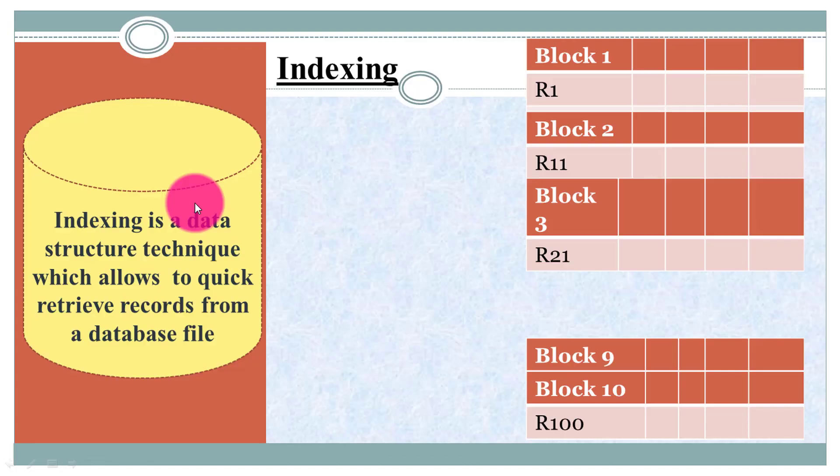For example, a book contains an index page. In that index page there are two columns: the first column is the topic name or term name, and the second one is the corresponding page number. The same thing we are going to do in indexing.